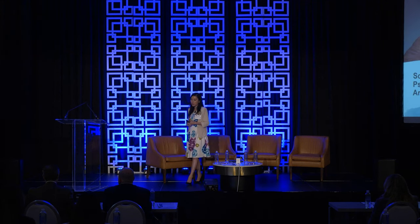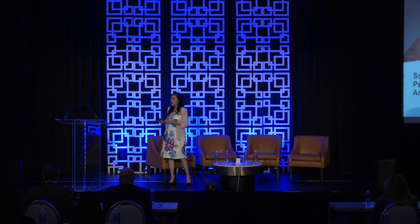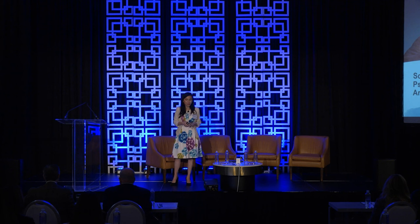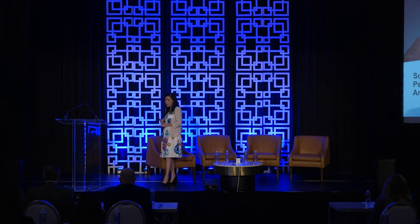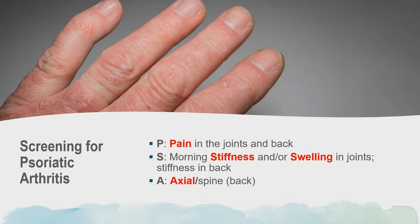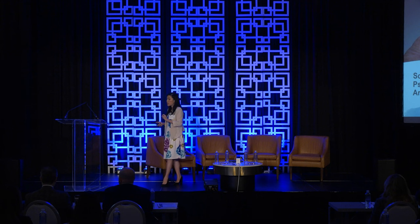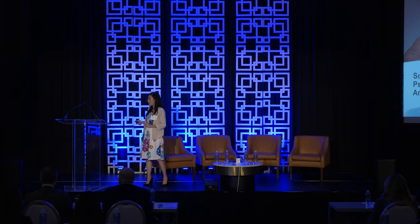Let's look at screening for psoriatic arthritis. One of the mnemonics I like is PSA, because it's easy to remember. P is pain in the joint or the back. S is stiffness — morning stiffness in the joints or swelling in the joints. You want to ask them: after they wake up in the morning, do they feel stiffness in their joints for more than 30 to 40 minutes? If they do, you may have a patient with early signs of psoriatic arthritis.